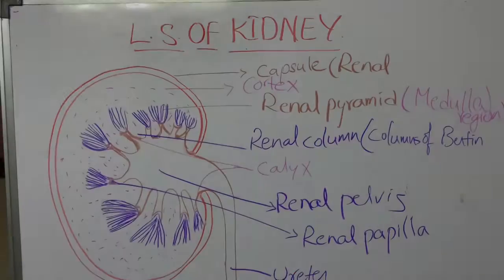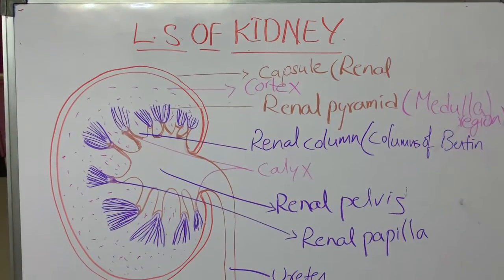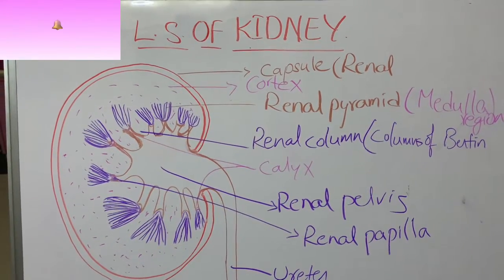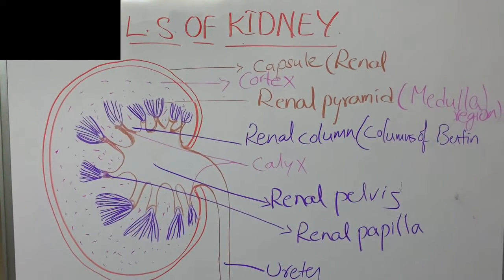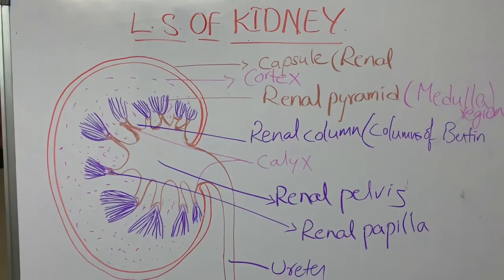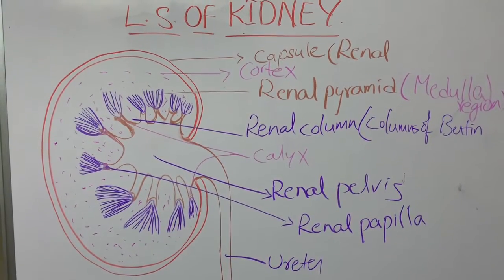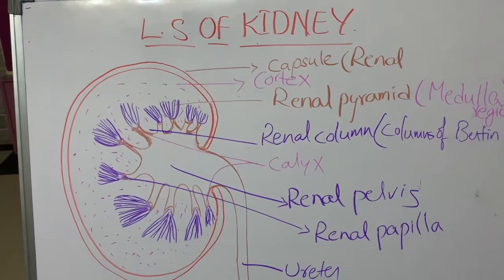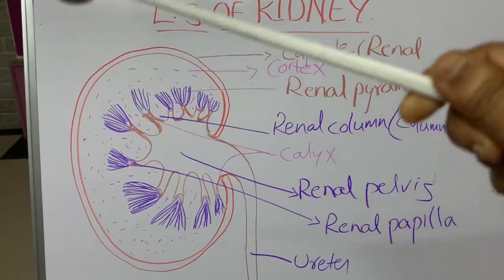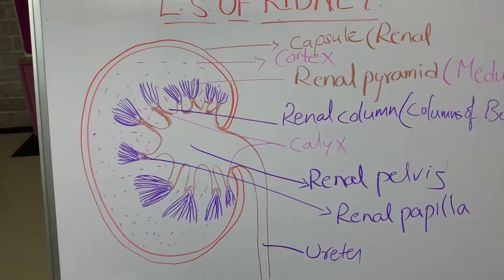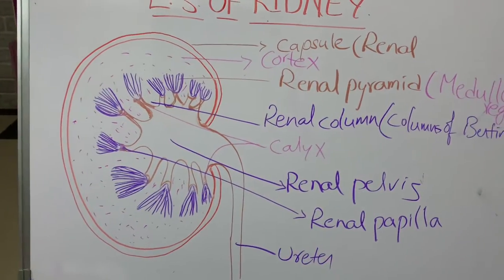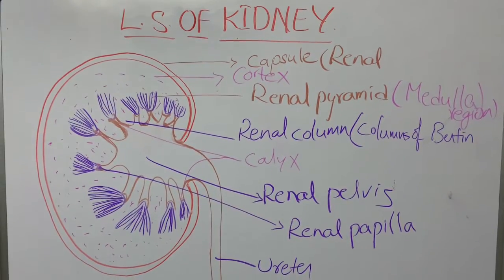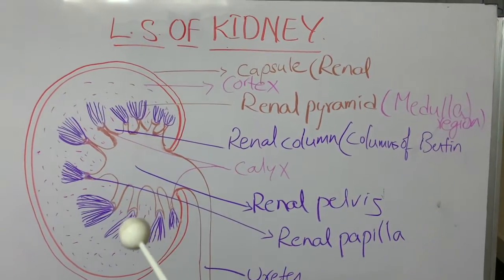Welcome to another class on the excretory system. Today we are going to learn about the longitudinal section of the kidney. We have two kidneys — the right kidney and the left kidney. When the kidney is cut in the anterior to posterior plane, that is known as the LS or longitudinal section.